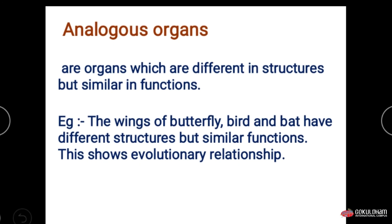The next type is analogous organs. Analogous organs are those organs which are different in structure but similar in function — structurally different but functionally similar. For example, wings of a butterfly and wings of a bird are structurally different but used for the similar function of flying.